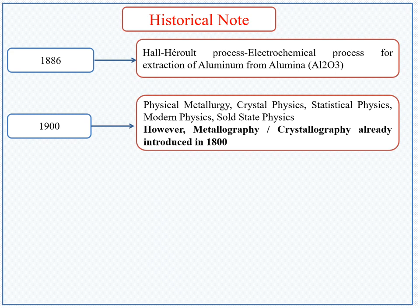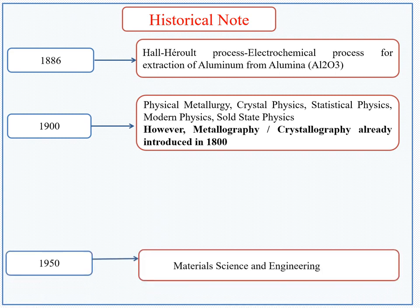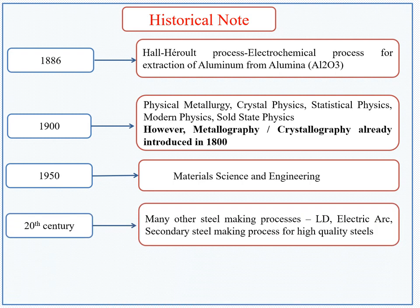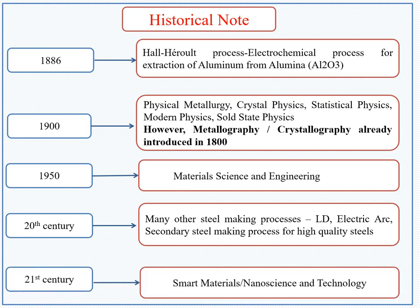Metallurgy and crystallography had already been introduced in 1800. In 1950, material science and engineering was first introduced. In the 20th century, many other steel-making processes such as electric arc furnace steelmaking and secondary steelmaking processes for high-quality steel were introduced. In the 21st century, smart materials and nanoscience and technology have been discovered.